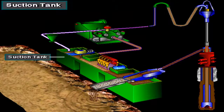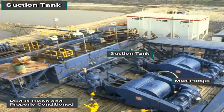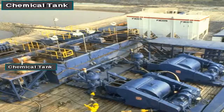The suction tank is where the mud pump picks up mud ready to circulate downhole. Mud in the suction tank should be clean, free of solids and gas, and be properly formulated or conditioned. Crew members use the chemical tank to mix special chemicals, such as caustic, that they will put into the active mud tanks.